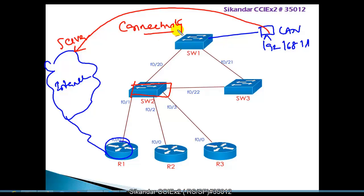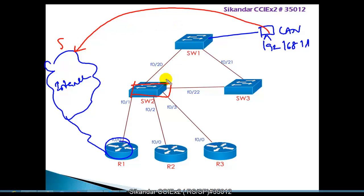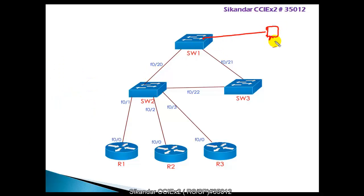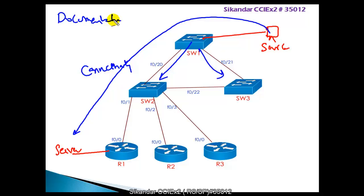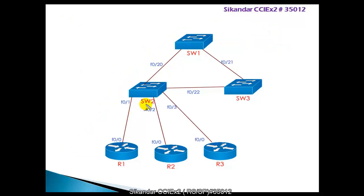To understand connectivity, you need proper documentation showing how devices are connected, their names, and IP addresses. Sometimes even with documentation you want to confirm that devices are properly connected - which port is connected and what the remote device is. By default, CDP runs on all interfaces, so you can use it to get that connectivity information.